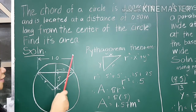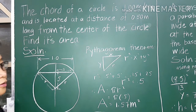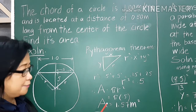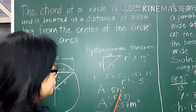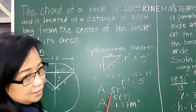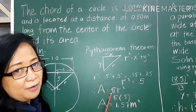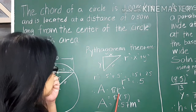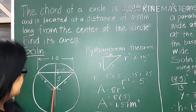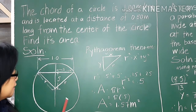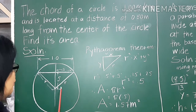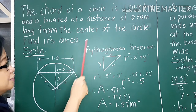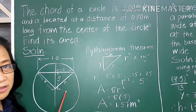We have to find the area of the circle. According to the formula, the area of the circle is pi r squared. Pi is known to be 3.14. We have to look for r, which is the radius of the circle. The radius is not given, so we have to solve for it.